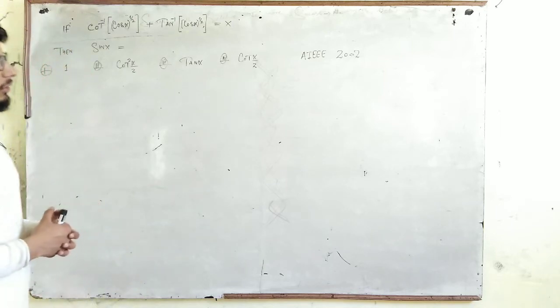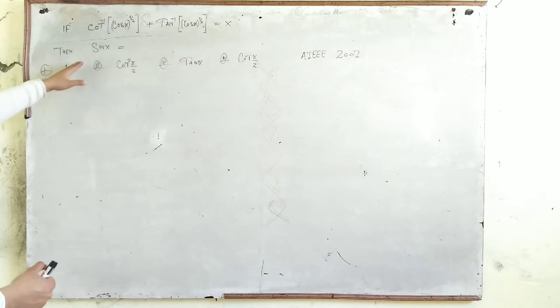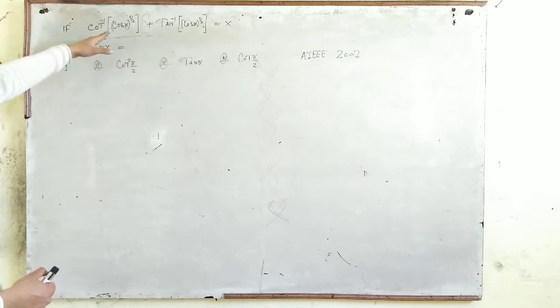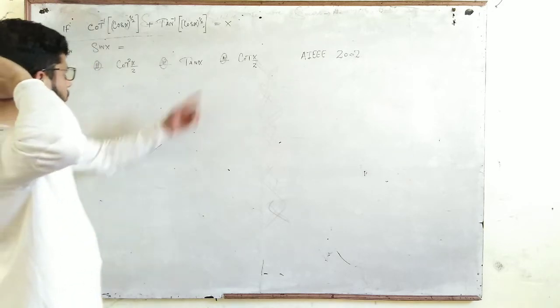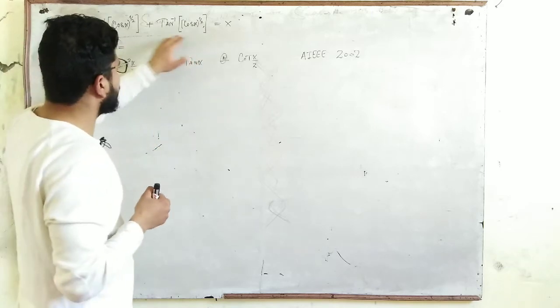In this IIT JEE 2002 problem, we need to find sine of x. The given relation is cotangent inverse of cosine alpha to the power 1/2 plus tangent inverse of cosine alpha to the power 1/2 equals x. This relation will give us the value of x.